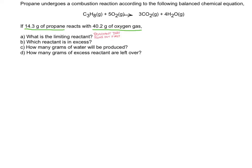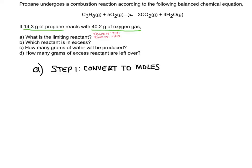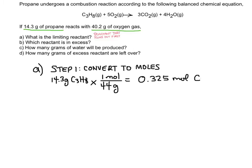Let's start by solving A and B, because they're going to work together. Anytime you're trying to figure out the limiting reactant, the first thing you have to do is convert the two amounts into moles. Let's start with the propane. I have 14.3 grams of propane, and to convert that to moles, I divide by the molar mass of propane — three carbons and eight hydrogens — that comes out to 44 grams per mole. So 14.3 divided by 44 gives 0.325 moles of propane.